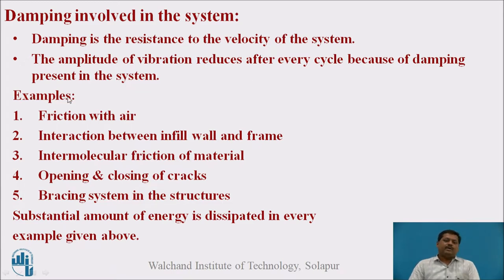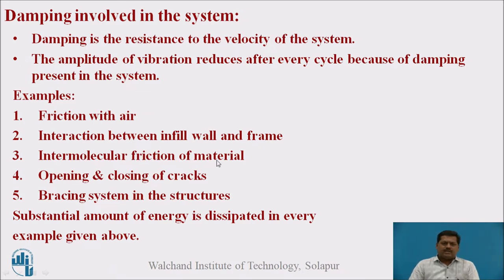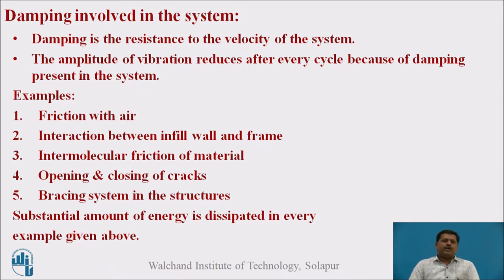What are the examples of damping? In general, friction with air is also damping — a very minor damping. In case of buildings subjected to vibration, the interaction between infill wall and frame generates damping in the building. For every material, intermolecular friction also generates damping. Opening and closing of cracks in structures — in masonry walls or material of the structure — requires a lot of energy to be dissipated, and that is also a sort of damping. In steel structures, bracing systems also play an important role in creating damping. Because of damping, a substantial amount of energy is dissipated in every example given above.